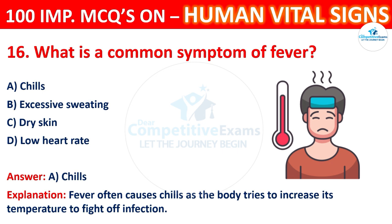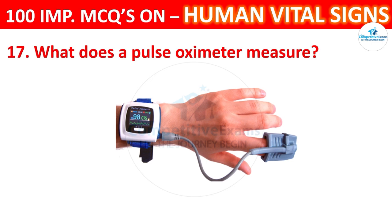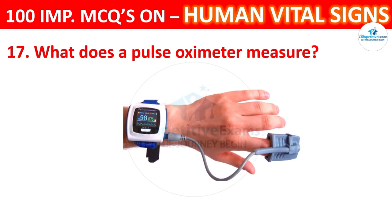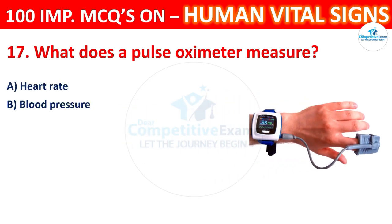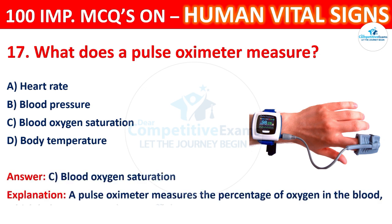Question 17: What does a pulse oximeter measure? Options: heart rate, blood pressure, blood oxygen saturation, or body temperature. The correct answer is C, blood oxygen saturation. A pulse oximeter measures the percentage of oxygen in the blood, which helps assess respiratory efficiency.